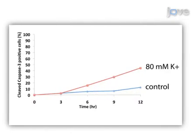Ultimately, results show rates of cell death in a cell population following a treatment or stimulus by monitoring nuclear fluorescence from a caspase-activated fluorogenic dye.